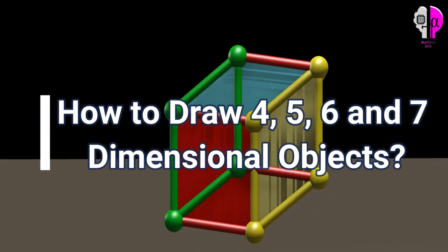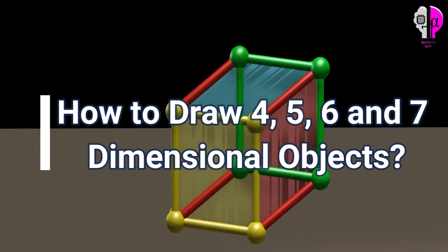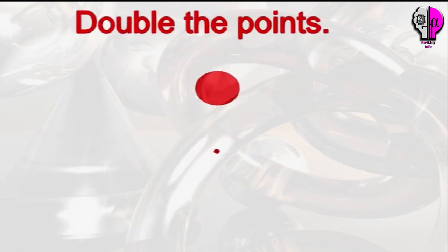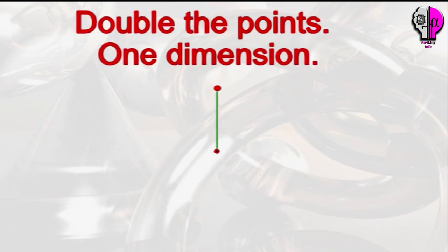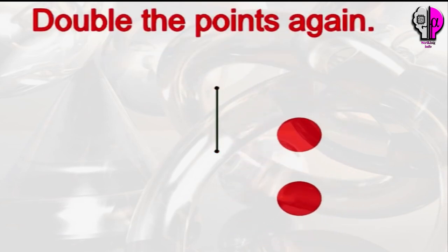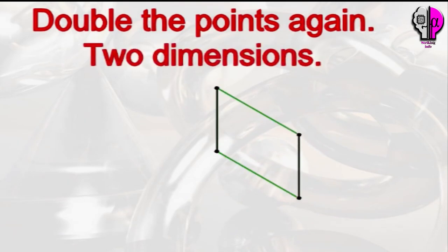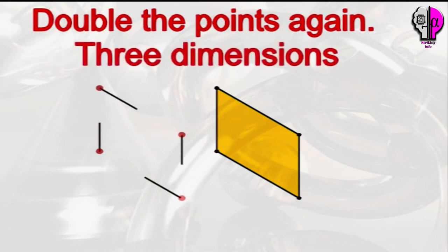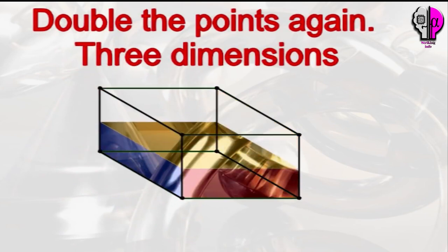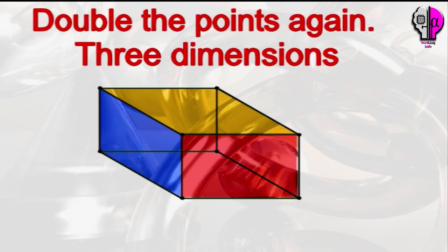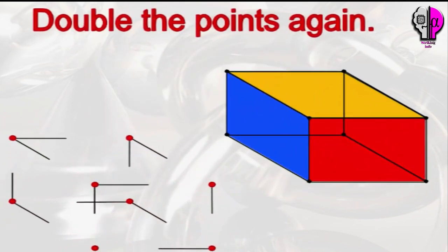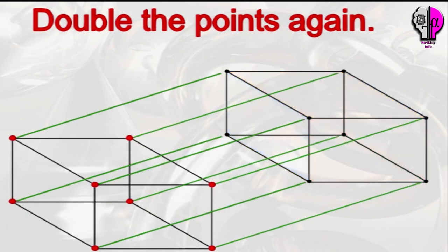How to draw four, five, six, and seven dimensional objects. At one point we have zero dimensions. Double the points and we have one dimension. Double the points again and we have two dimensions. Double the points again and we have three dimensions. Double the points yet again and we have four dimensions.